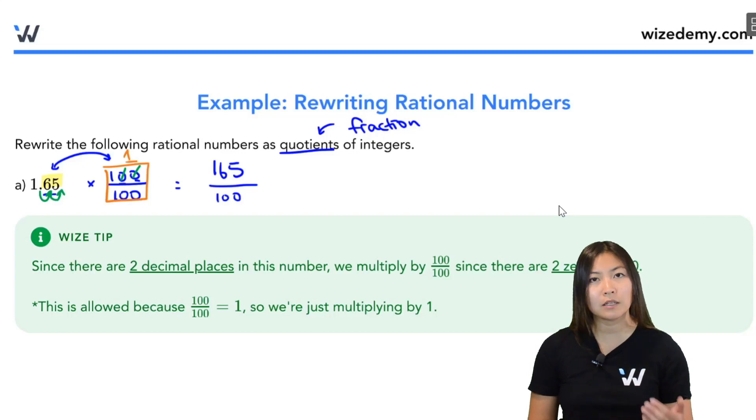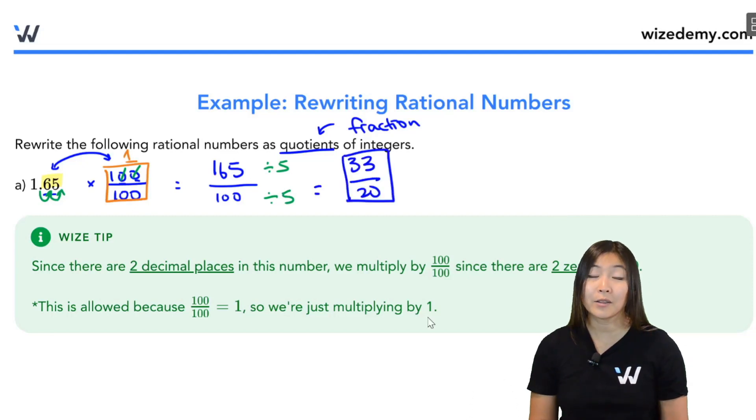Now, of course, whenever we see fraction, it's a little bit more annoying. You want to simplify as much as possible. Well, I can divide the numerator by 5 and the denominator by 5 as well because 5 goes into both numbers. And if I do that, we end up with 33 over 20. Now, this is the simplified form of the rational number.